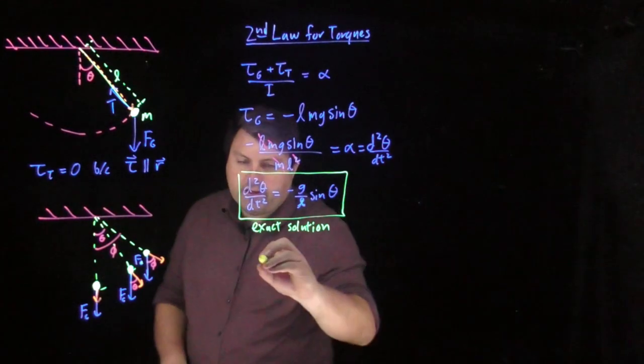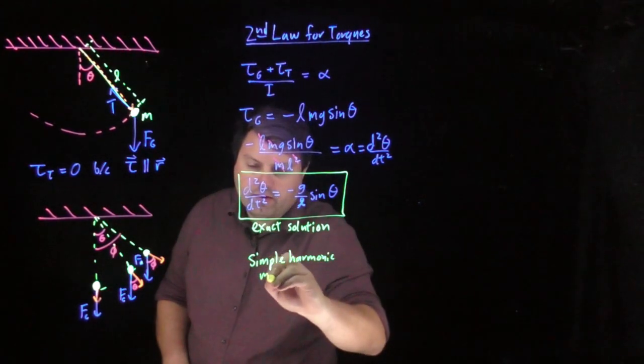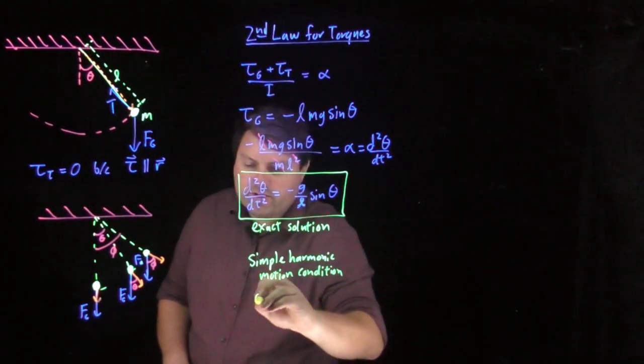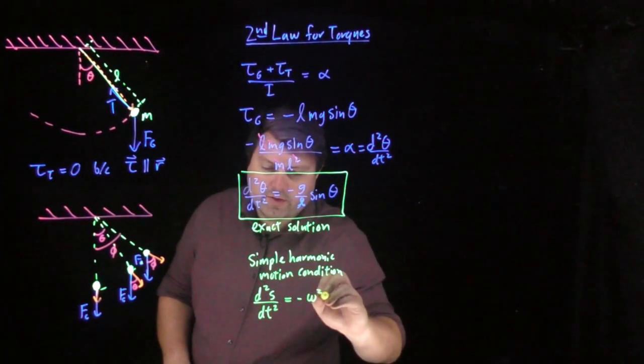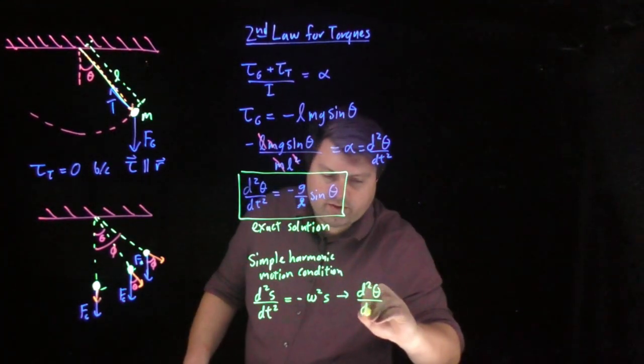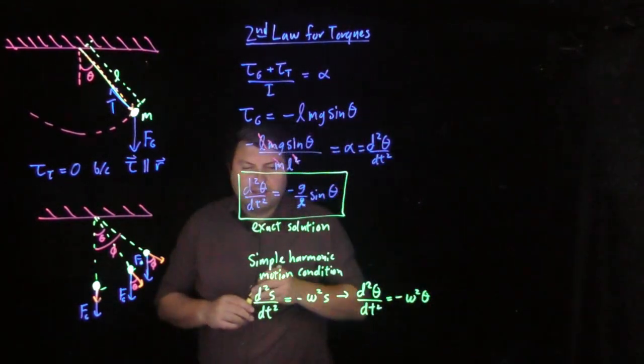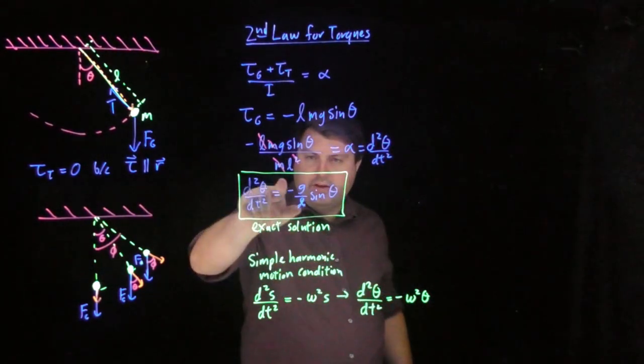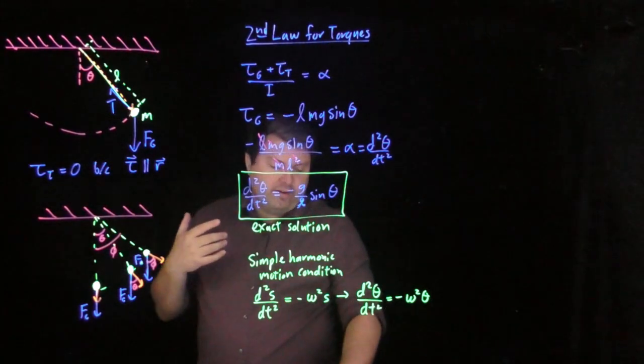But let's take a look at the simple harmonic motion condition. That condition says the second derivative with respect to dt squared is equal to negative omega squared s. So for us, this would be the second derivative of theta, dt squared equals negative omega squared theta. This is looking pretty close. We have the negative, we have some constant omega squared. But this sine theta and this theta don't exactly match.